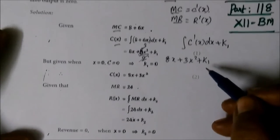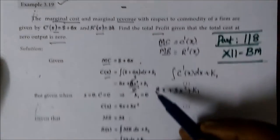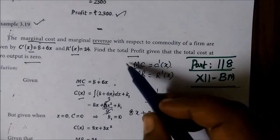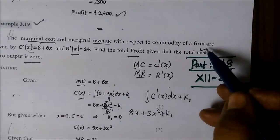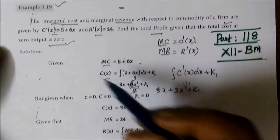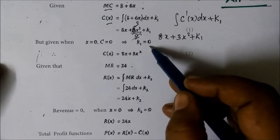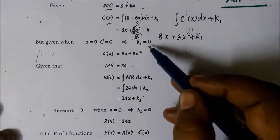Now K₁ value will change. Output is 0, so x equals 0. That means C is 0. Total cost at zero output. So K₁ is equal to 0.